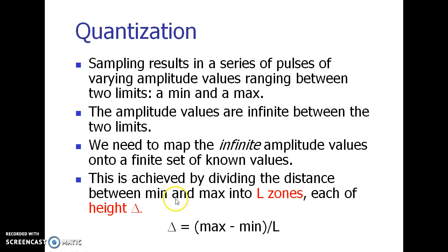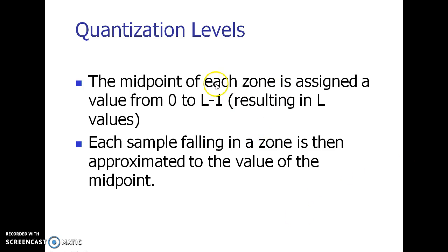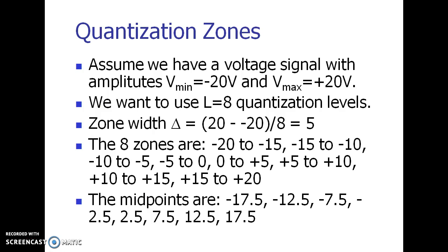To find the quantization levels: take your signal range from a_min to a_max and divide it into L zones. You get L blocks, each of height delta (the step size), calculated as delta = (max value − min value) / L. For each zone, find the midpoint and assign it a value from 0 to L−1. Any sample value at any time will lie in a zone — approximate it to the midpoint value of that corresponding zone.